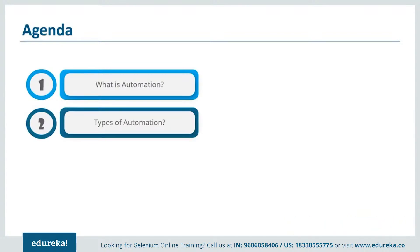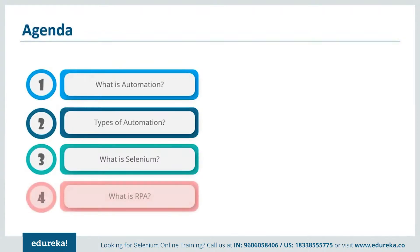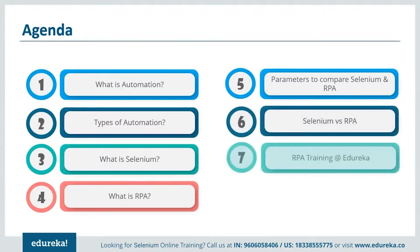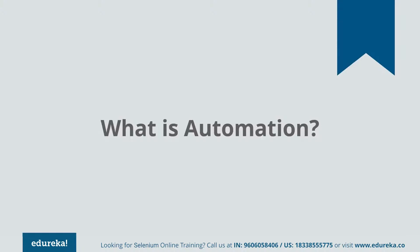We'll talk about the automation testing tool Selenium and learn its features, then take a look at the business process automation technology RPA and comprehend how it is used to automate repetitive tasks. We'll discuss the parameters for comparing both Selenium and RPA, talk about their similarities, and finally wrap up by comparing them based on those parameters.